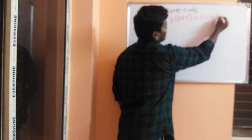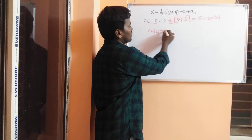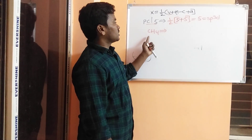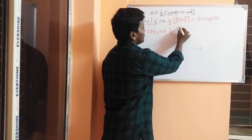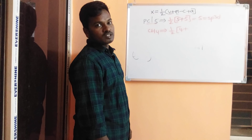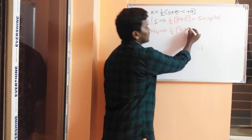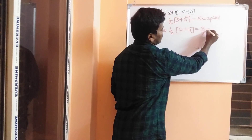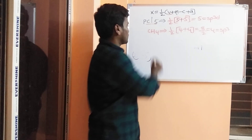Next: CH₄ (methane). The central atom is carbon, which has 4 valence electrons (V equals 4). Hydrogen is monovalent, and there are 4 hydrogen atoms (M equals 4). One by two of (4 + 4) equals 4, so CH₄ has sp³ hybridization.